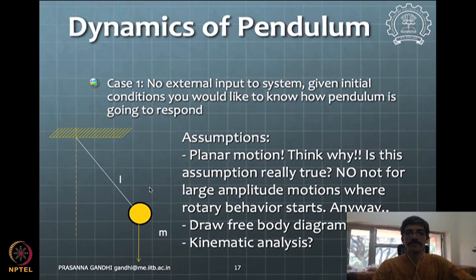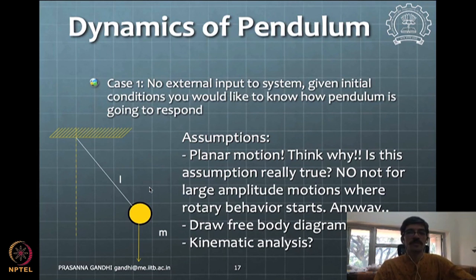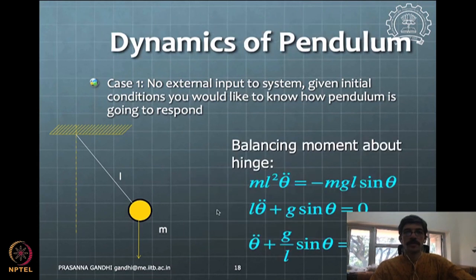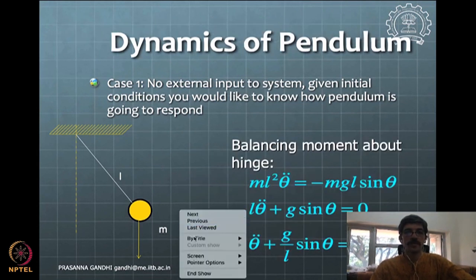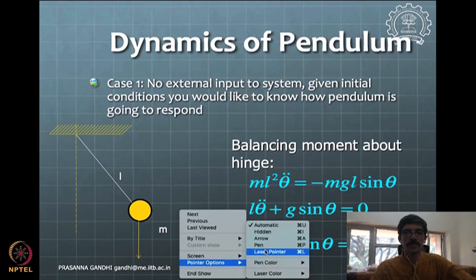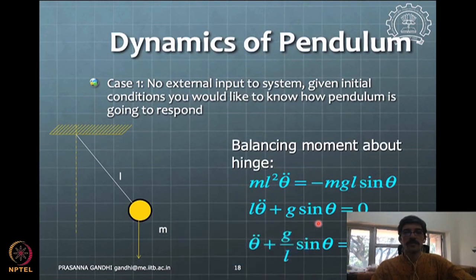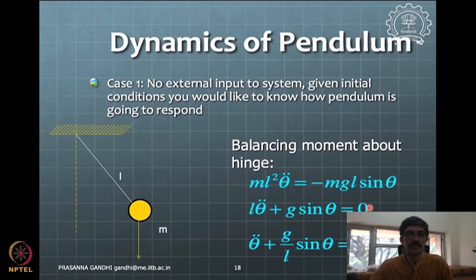This pendulum — you can get a model if you have not done already by doing a free body diagram or kinematic analysis of the circular motion of a point mass. I am not getting into the details there. You can see this model of a pendulum here. This model gives you the full nonlinear form of an equation considering theta — the angle of the pendulum — beyond the small angle approximation.